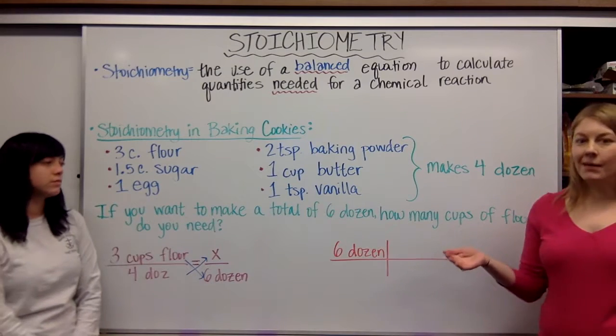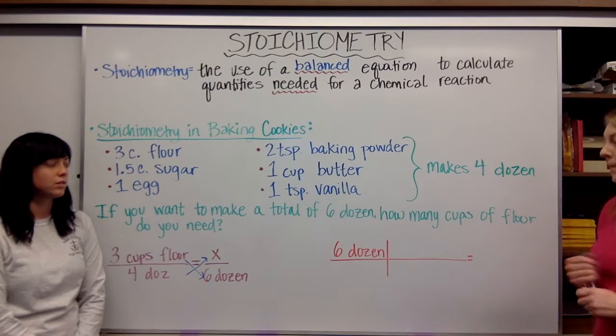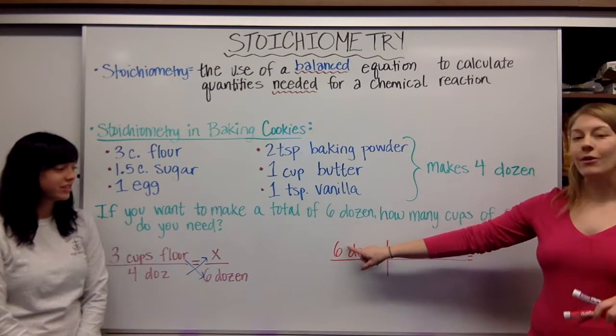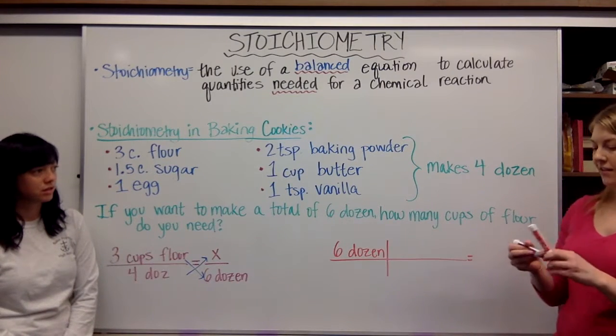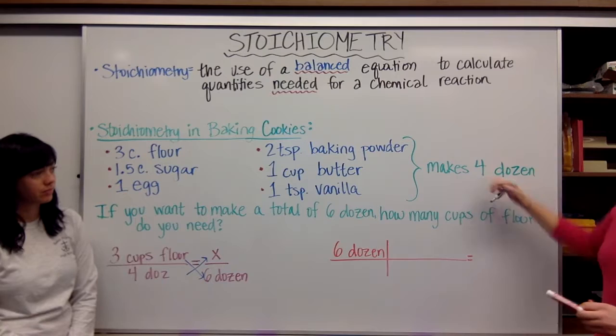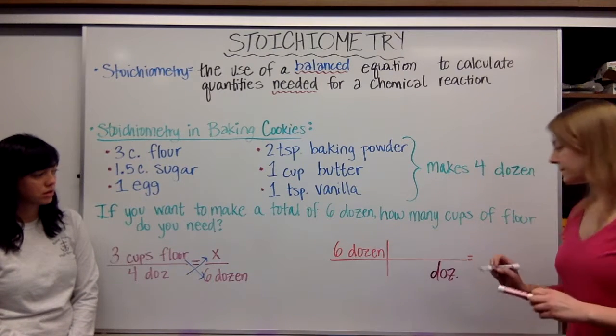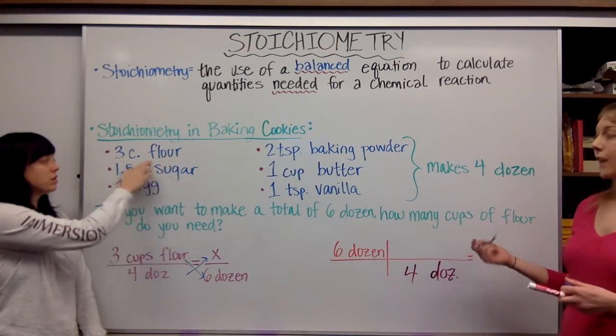What you've seen in chemistry now, and what we're going to be using, is stoichiometry to do the same problem. Dimensional analysis, to do the same problem for stoichiometry. So if we're starting with six dozen cookies, or we know we want six dozen cookies, and up here, I know that it makes four dozen. So I'm going to put dozen on the bottom. Makes four dozen cookies.